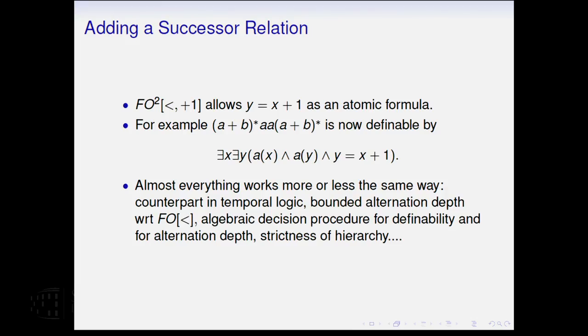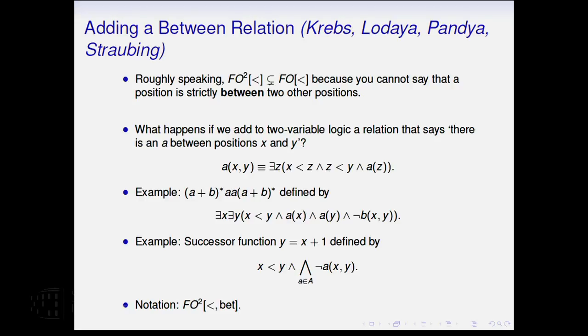So I'm going to change this logic a little bit. I haven't said anything about this thing that if you had a successor relation, you can define more stuff. Almost everything works the same way. There's a counterpart in temporal logic. It is bounded alternation depth with respect to the larger logic. There's an algebraic decision procedure for definability. The hierarchy is strict. I don't think you get the collapse result in the same way for this one. It's different with successor.